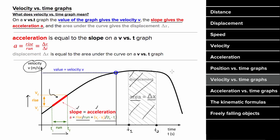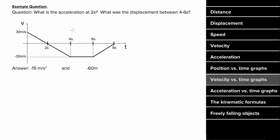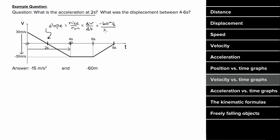What would an example problem involving velocity versus time graphs look like? If you had this graph and wanted to determine the acceleration at two seconds, the acceleration equals the slope at two seconds. Since the slope is constant, we pick zero and four seconds for convenience. The rise is the change in velocity: negative 60 meters per second. The run is the change in time: four seconds. This gives a slope of negative 15 meters per second squared, which is also the acceleration in that time period.